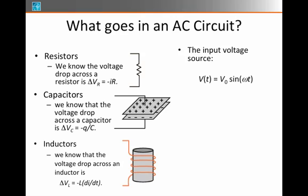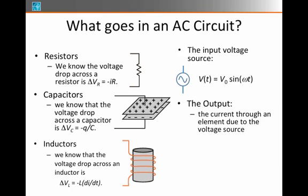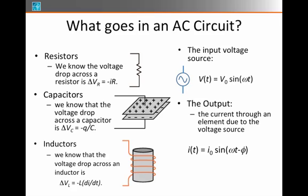The input voltage source will have a functional form, like we said, of V(t) = V₀ sin(ωt), and then the current that we're trying to predict will have a form I(t) = I₀ sin(ωt - φ). I₀ will be the amplitude of the current swing, and φ will be the phase delay. It's how much the current graph will be shifted relative to the voltage graph. And our job will be to predict that.